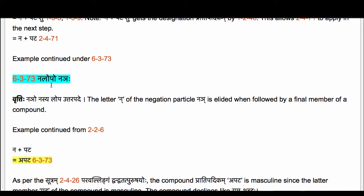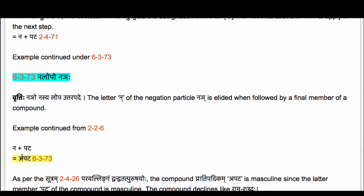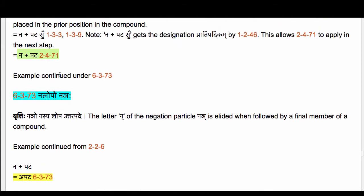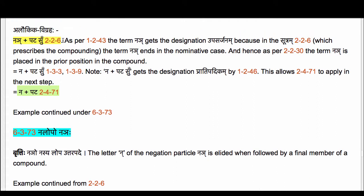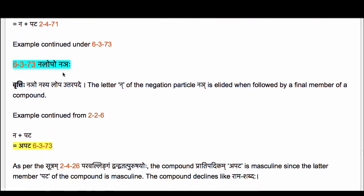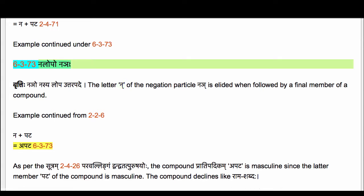We are in the middle of deriving the compound Apataha. We are at the stage where we have Na Pata. We used the Sutram 2.2.6 Nyai to compose this compound, and now we have to elide — do Lopaha of the beginning letter Na of the particle Nyai.